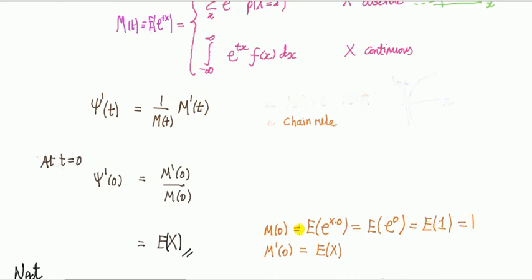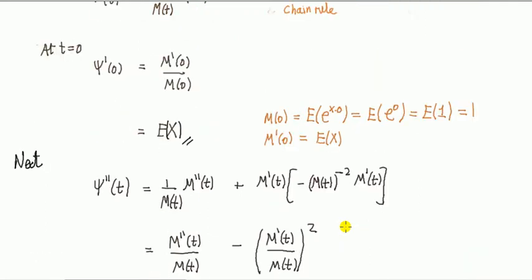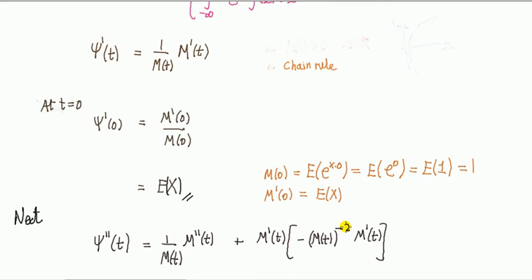And expected value of a constant is a constant, so it's one. You already know by properties of MGF that the first derivative of the MGF computed at zero is the mean, is the first raw moment. Next, the second derivative, the second cumulant.